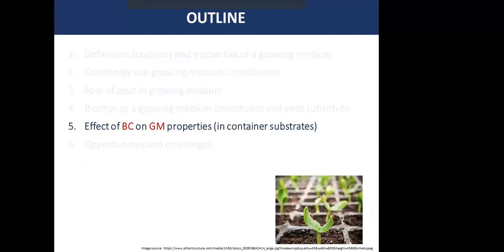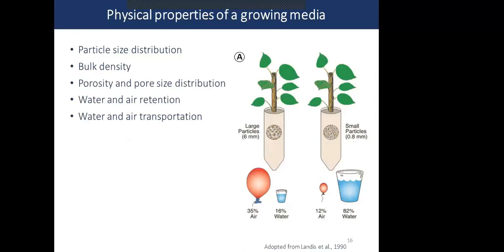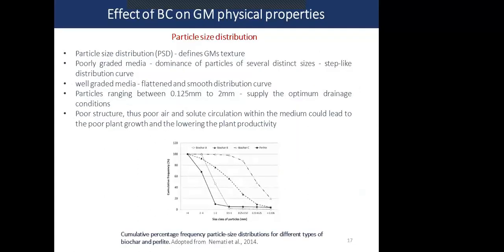I would like to give special focus on container substrates and look at how biochar affects the physical properties of growing mediums. Key physical properties include particle size distribution, bulk density, porosity, pore size distribution, and water and air retention. If the medium has large particles, it retains more air compared to water, while a medium with smaller particles retains more moisture than air. We should have a good balance between large and small particles.